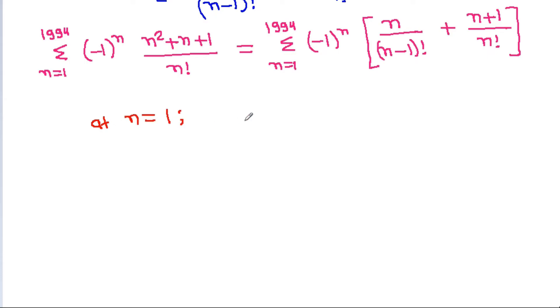At n equal to 1, (-1)^1 is minus 1, giving -1/0! and -2/1!. At n equal to 2, (-1)^2 is plus, giving +2/1! and +3/2!.